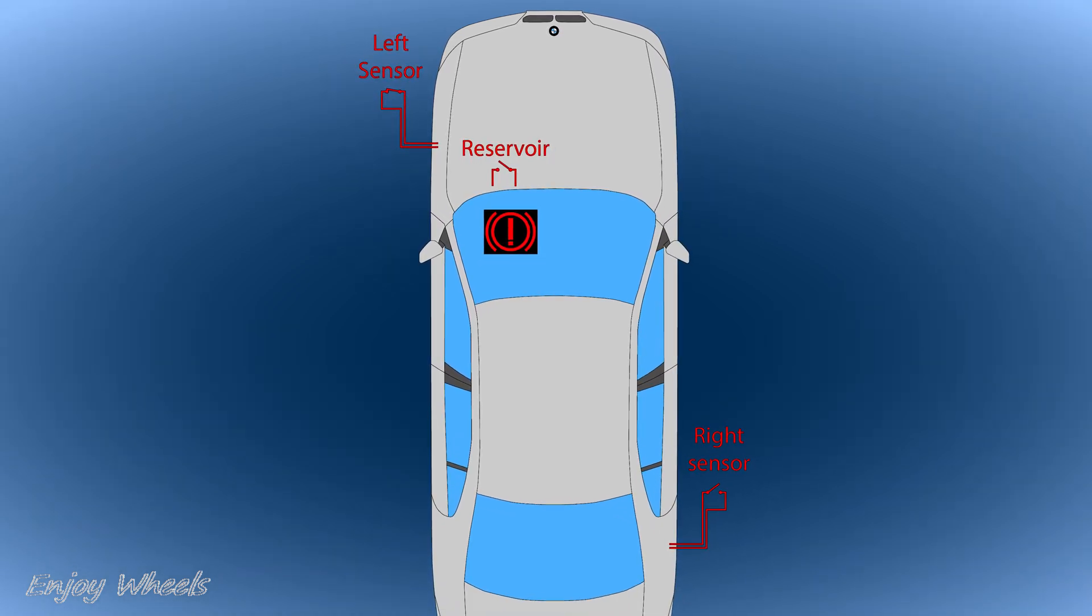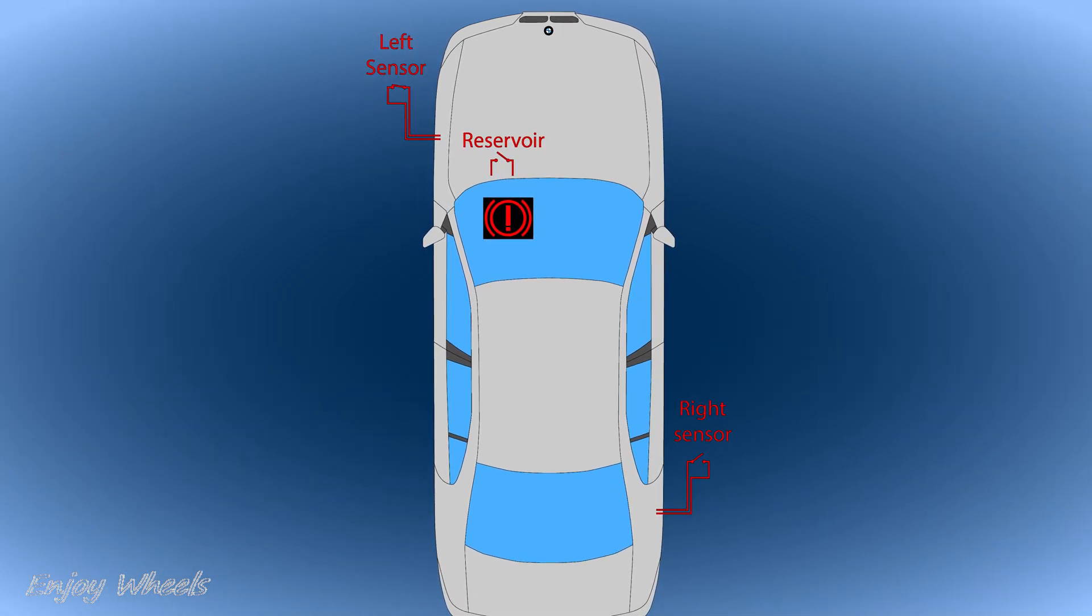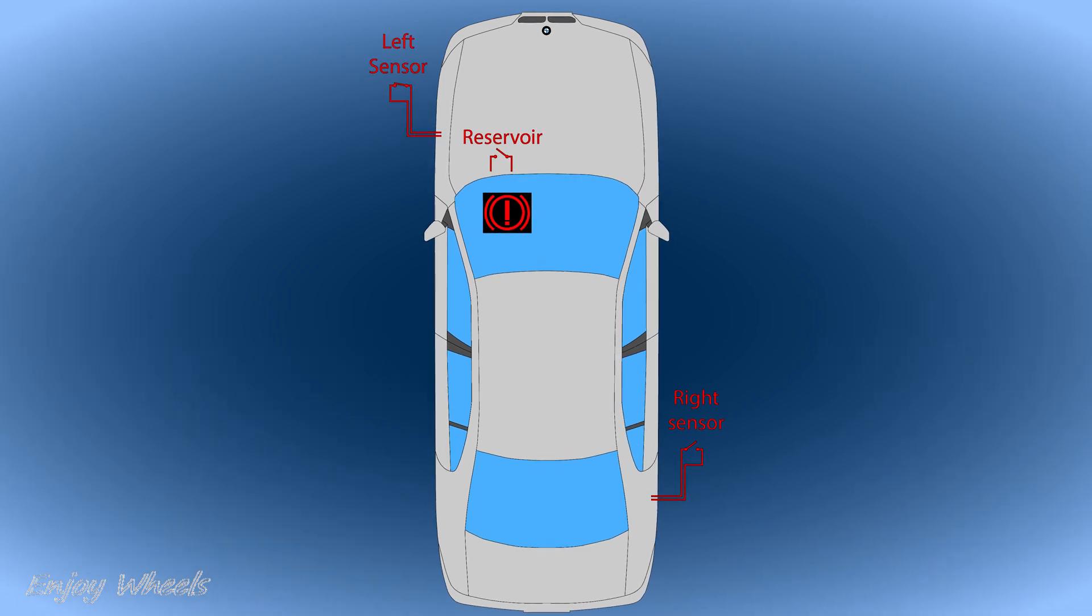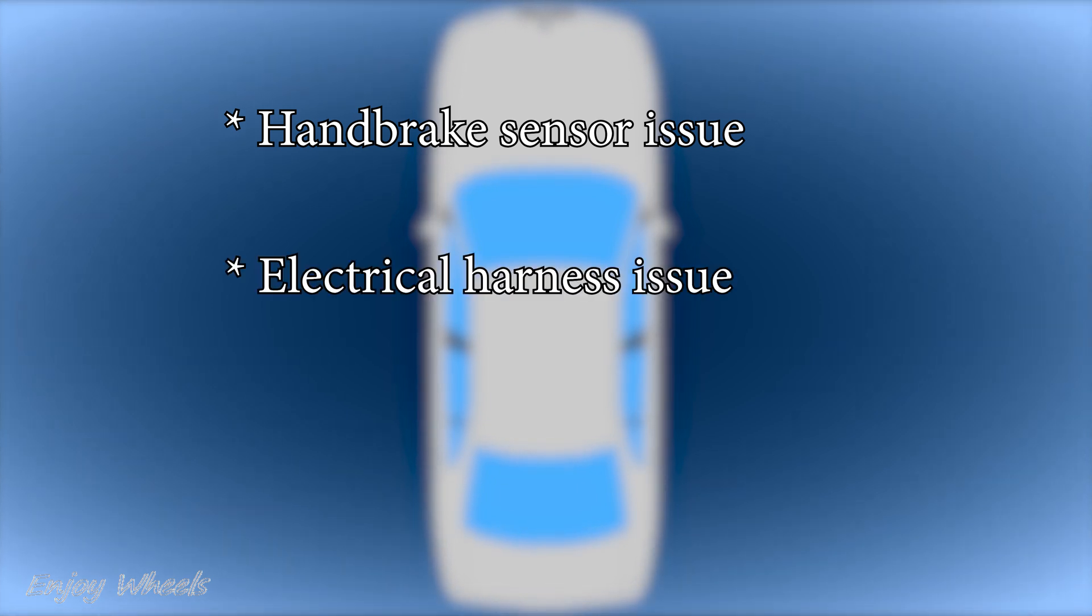But for you, if after checking all this your brake warning light still remains on, the following causes are possible: it could be a problem with the handbrake sensor for cars whose brake light is coupled to the handbrake, it could be a wiring harness problem with poor electrical contact or moisture, or it can be other possibilities that I have not mentioned. I invite you to let me know in the comments.